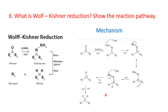In both Clemmensen reduction and Wolff-Kishner reduction, carbonyl compounds are converted to alkane. The only difference is that in Clemmensen reduction, the reduction takes place directly with the carbonyl compound, whereas in Wolff-Kishner reduction, the reduction occurs with the hydrazone derivative of the carbonyl compound. With this, we have come to the end of this video. Thank you.